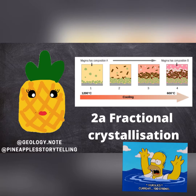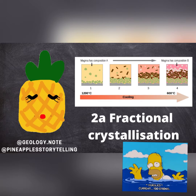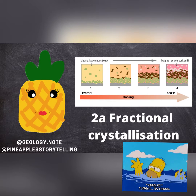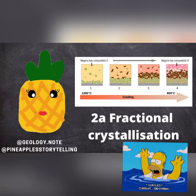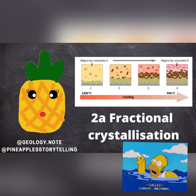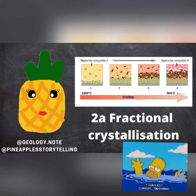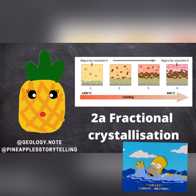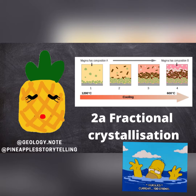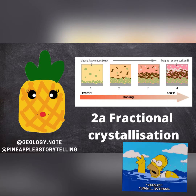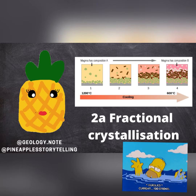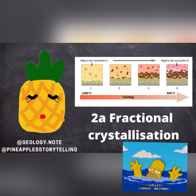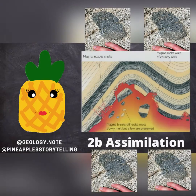including fractional crystallization and assimilation. For fractional crystallization, as magma cools, heavy crystals settle by gravity due to their specific densities. This results in a change in the melting composition, leaving lighter minerals behind in the melt.